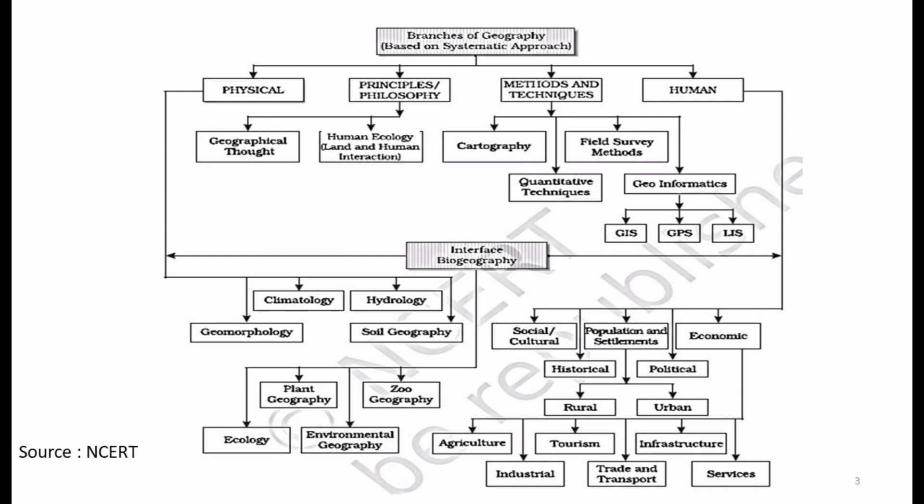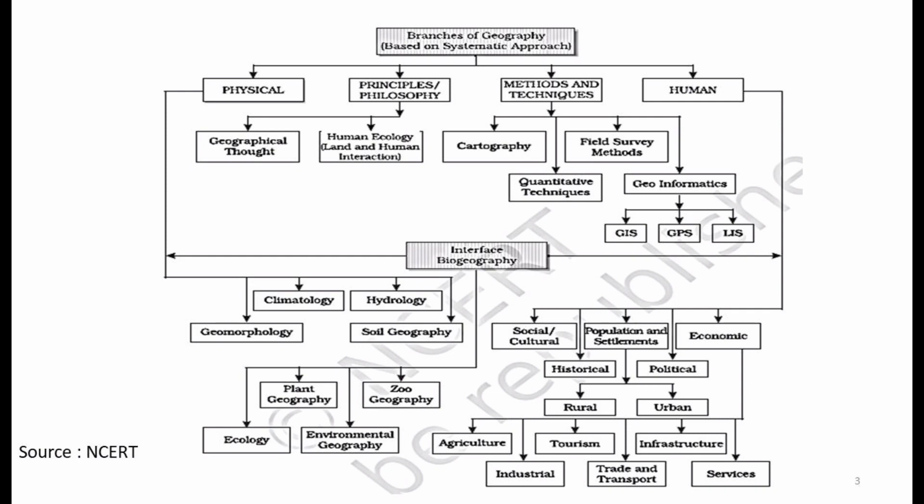There is also an interface between physical geography and human geography, termed biogeography. It is divided into four parts: Ecology, which studies the interaction between abiotic and biotic components of the environment; Plant Geography, which studies plants; Environmental Geography, which studies the environment; and Zoo Geography, which studies fauna or animals. To summarize, based on the systematic approach, geography is divided into four parts — Physical, Principles and Philosophy, Methods and Techniques, and Human Geography — with the interface between physical and human geography termed biogeography.